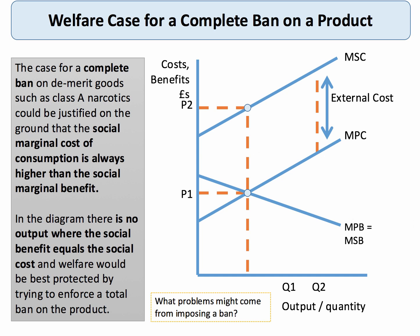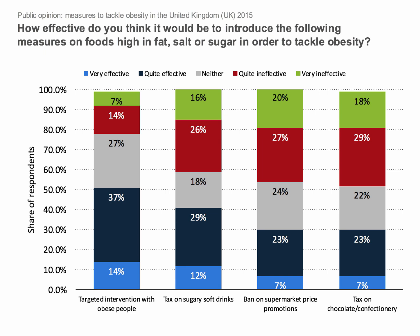Examples might include legal highs or extremely addictive hard drugs. However, even if you ban something, there are unintended consequences: costs of enforcement, monitoring, and implementing the ban, and secondary markets might emerge with even bigger longer-term effects. That is the diagram you would use when arguing for a complete ban.